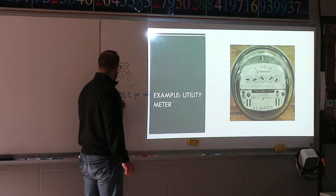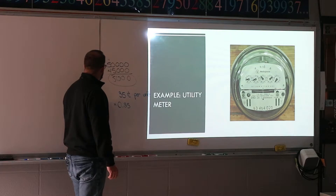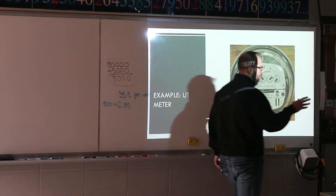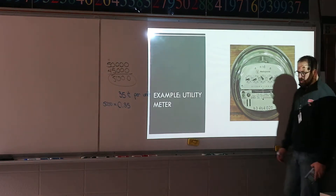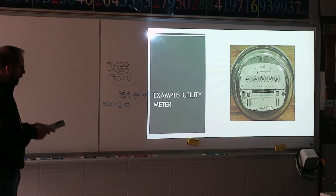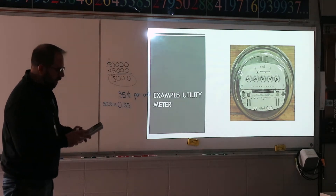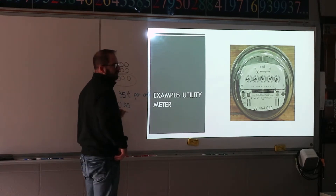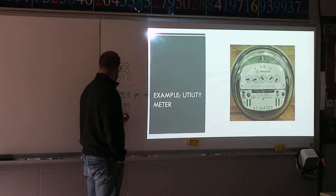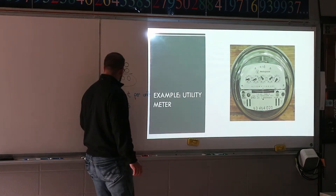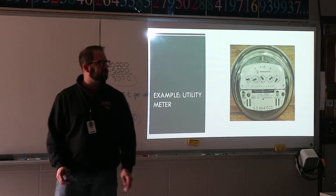35 cents is 0.35. You're going to take that times the 5,000, and this will give you your bill for that month. That's literally what they do — they give you your usage number. The water company does that, gas companies do it all the time. If I multiply 0.35 times 5,000, that's $1,750. Maybe that's your six months' usage of gas.